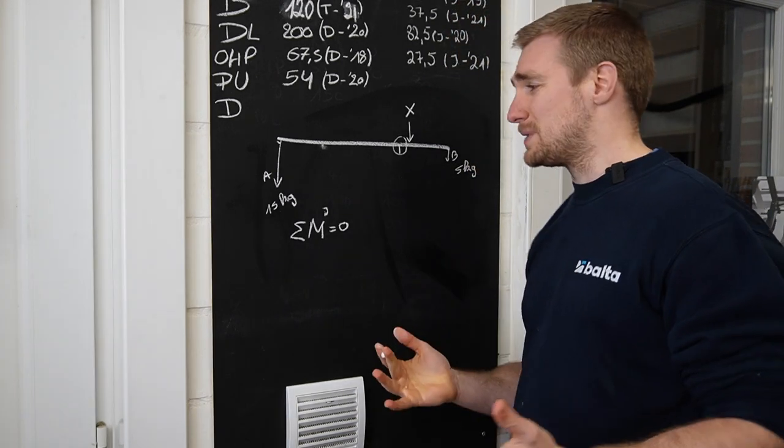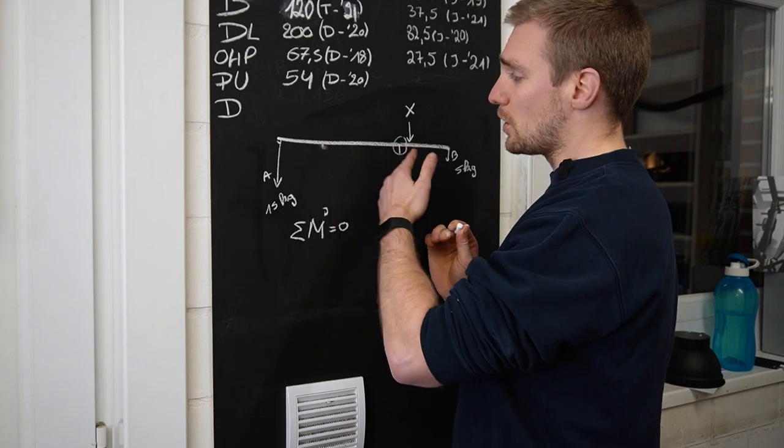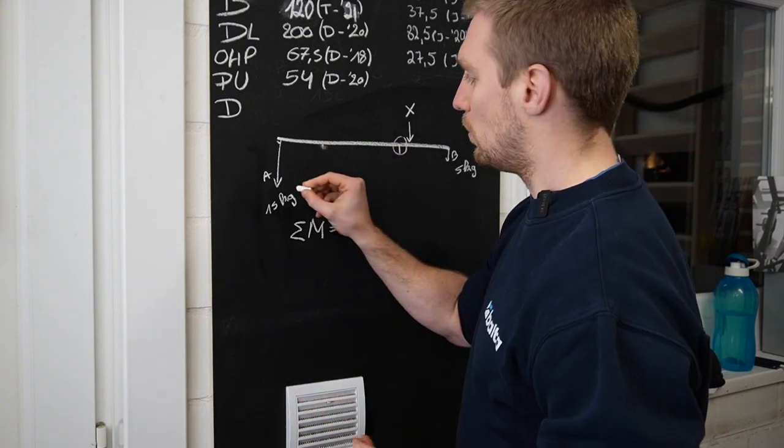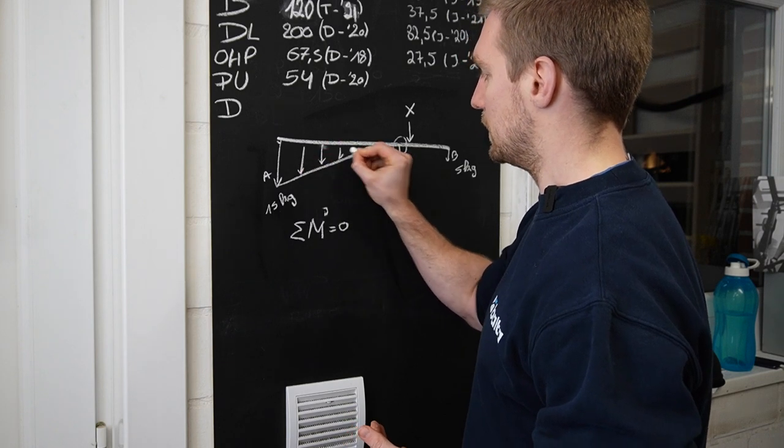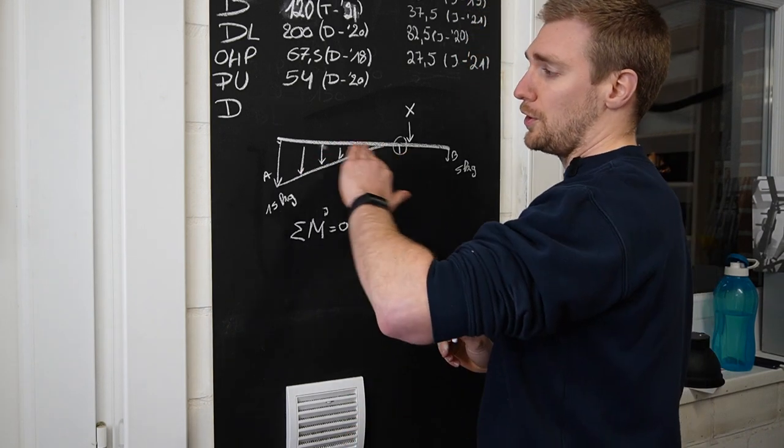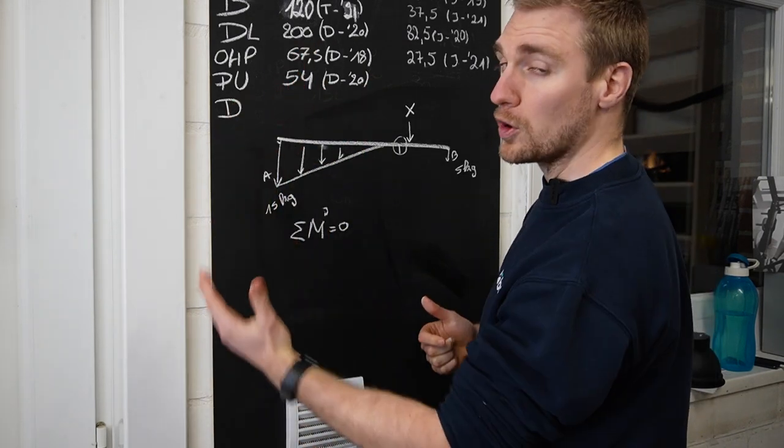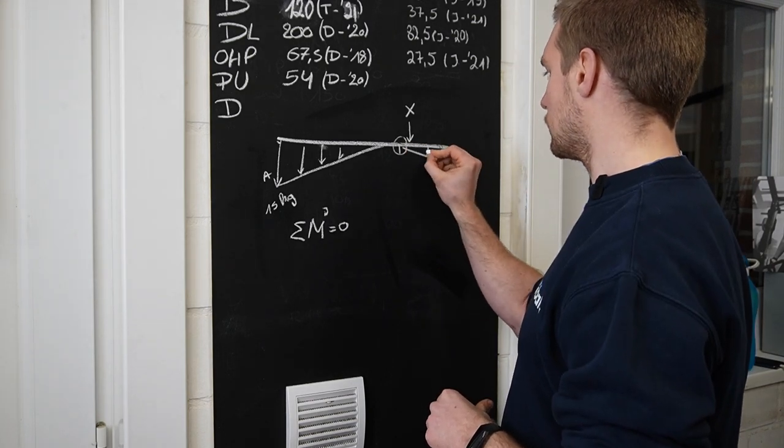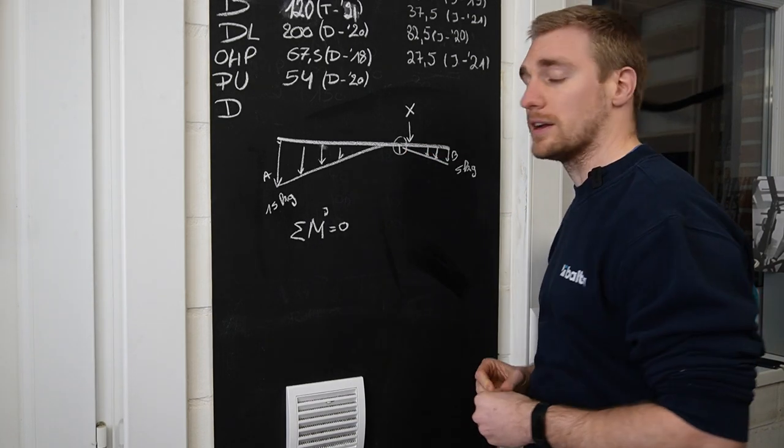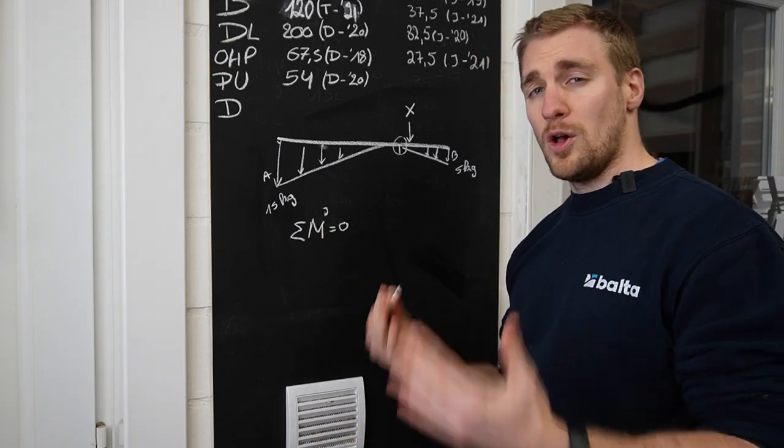So moment is force times distance, but because the bar has an equal weight across the whole length, what we have is a distribution that looks like this for the moment. So the further away from the bar, the more the bar is going to put force in that direction. The same thing goes for B, so that is also going to be a little triangle. So now we want to fill in this formula and sum up all the moments.